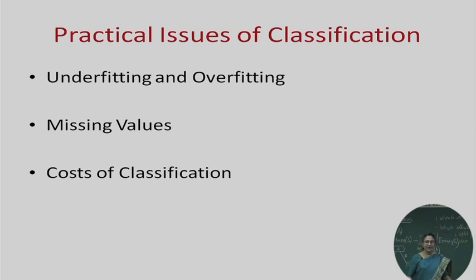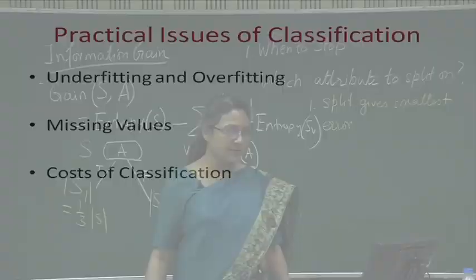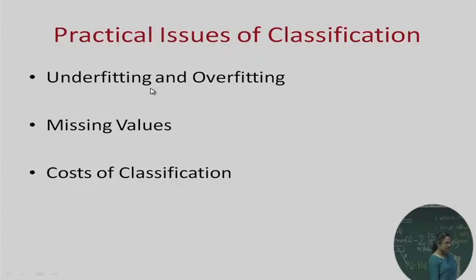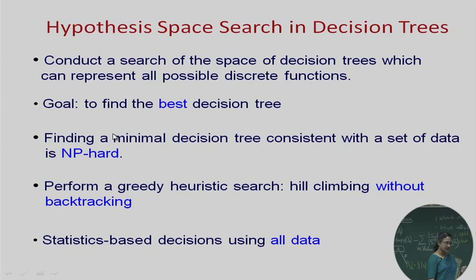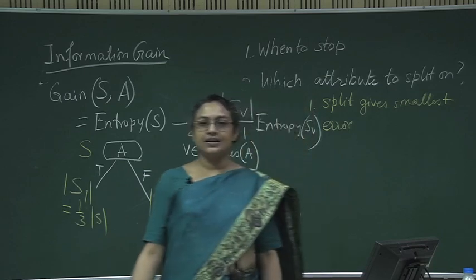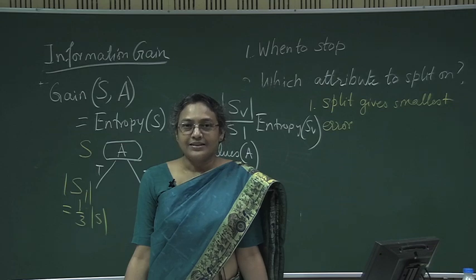We have covered the basic algorithm for decision trees. There are certain other things to worry about when working with decision trees and other learning algorithms — underfitting and overfitting, missing values, cost of classification, etc. — which we will cover in a later class. With this we stop our lecture for this particular module and will continue again in the next class. Thank you.